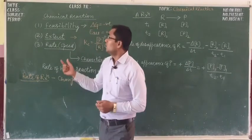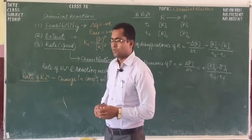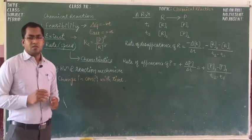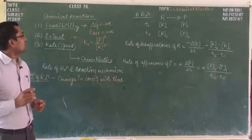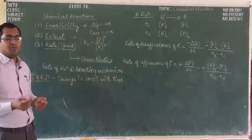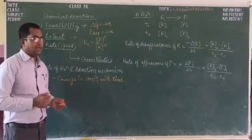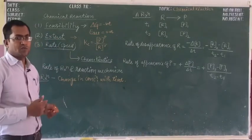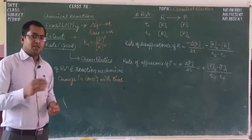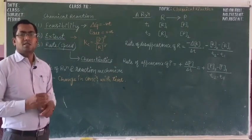Students, while we are talking about a chemical reaction, three questions come into our mind. First is feasibility — whether the reaction is feasible or not. Second thing is the extent to which the reaction proceeds. And third thing is the rate of reaction, or the speed of reaction by which the reaction proceeds.